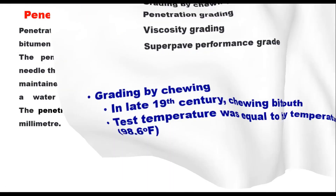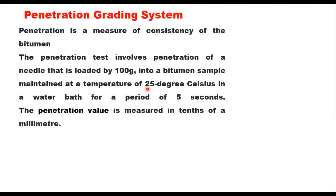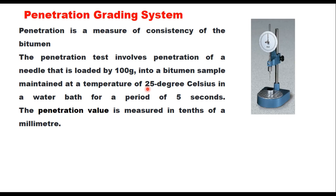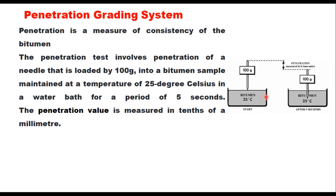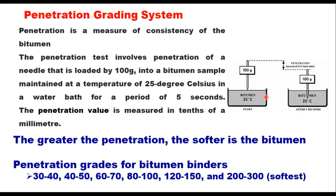In 1903, ASTM developed the penetration test to grade bitumen at 25°C, and this was considered a measure of consistency of the bitumen. The penetration test involves penetration of a needle loaded by 100 grams into a bitumen sample maintained at 25°C in a water bath for a period of 5 seconds. The penetration value is measured in tenths of a millimetre. The greater the penetration value, the softer is the bitumen.